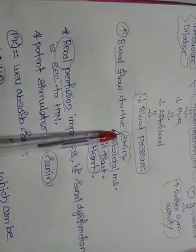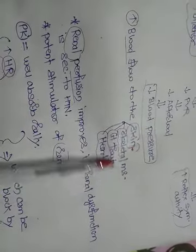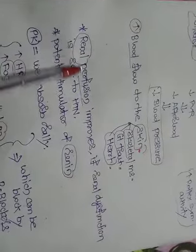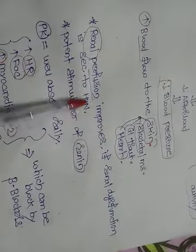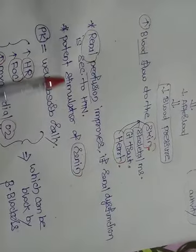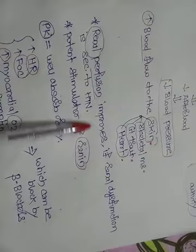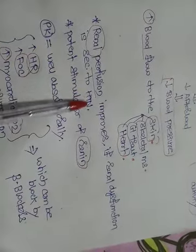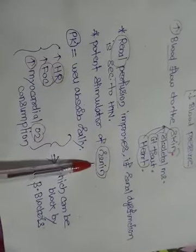There is increased blood flow to the skin, skeletal muscles, GI tract, and heart. Renal perfusion also improves if renal dysfunction is secondary to the hypertension. It is a potent stimulator of renin.